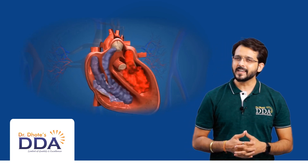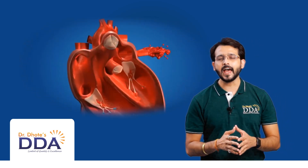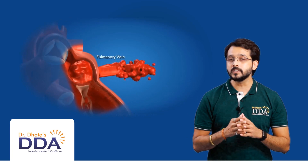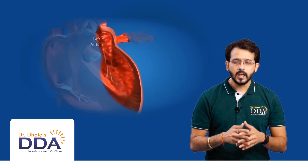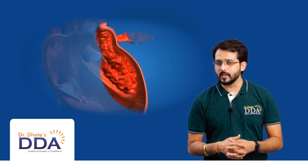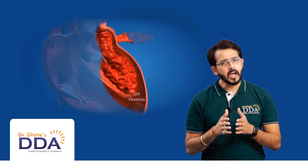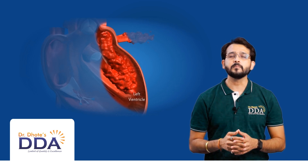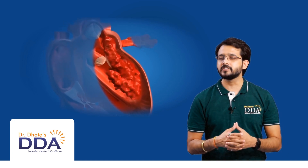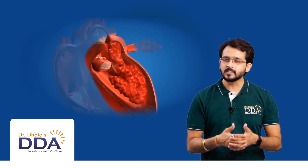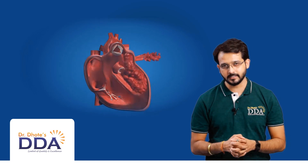Blood becomes oxygenated in the lungs and is carried towards the relaxed left atrium through the pulmonary veins. The left atrium contracts and pumps blood into the left ventricle. After filling, the left ventricle pushes that blood into the aorta, which is the largest blood vessel of the body.